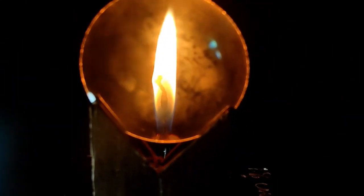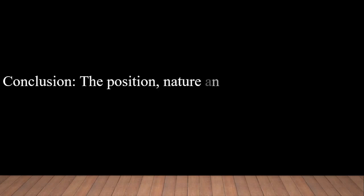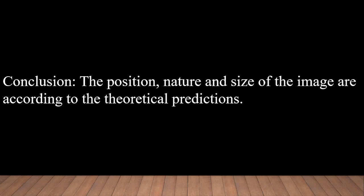Now let us write down what we concluded from these experiments. The conclusion is: the position, nature, and size of the image are according to the theoretical predictions. Learning with experiments is always enjoyable. I am sure you must have enjoyed and understood this activity — that is, the formation of images by a concave mirror and a convex lens very well. That's all in this session. See you next time.